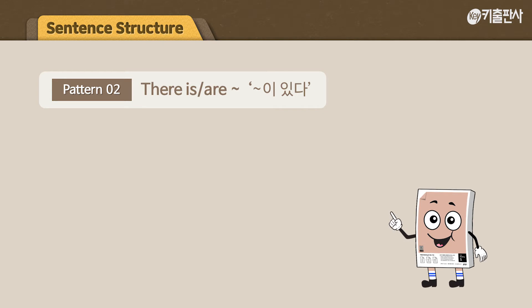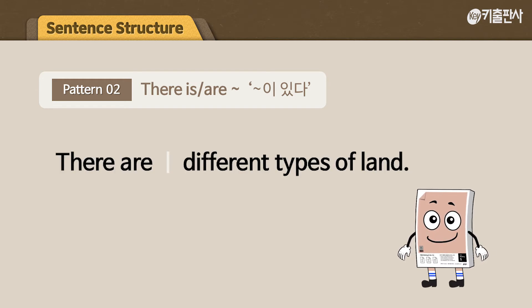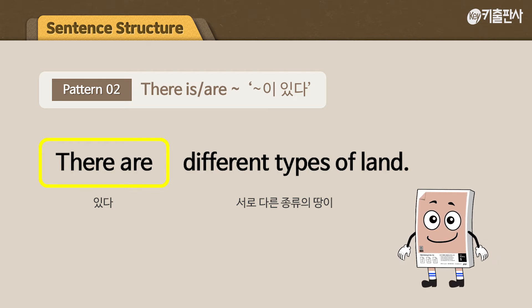There is, there are. There is 또는 there are로 시작하는 문장은 '무엇이 있다'라고 해석해요. 갯수가 하나일 때는 is, 하나보다 많을 때는 are을 쓰면 되겠죠? There are different types of land. 문장이 there are로 시작하네요. 한번 해석해 볼까요? There are, 있다. Different types of land, 서로 다른 종류의 땅이. 잘했어요, 친구들.